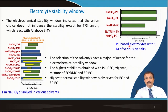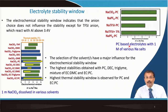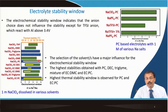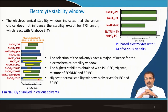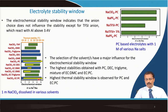The highest stability is obtained with PC/DEC, then triglyme, then a mixture of EC/DMC, or EC and PC. Highest thermal stability window is observed for PC and EC:PC mixtures. These are good guidelines for selecting what kind of solvent and salt to use — not only to control ionic conductivity and viscosity, but also the electrochemical window (the HOMO-LUMO band voltage range you can operate in) and the thermal stability of the electrolyte solution.